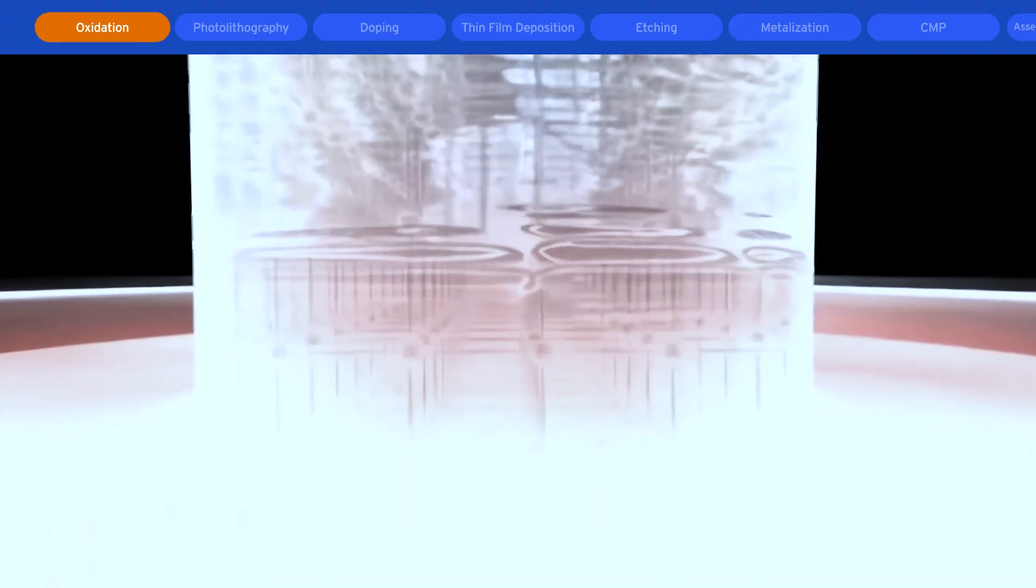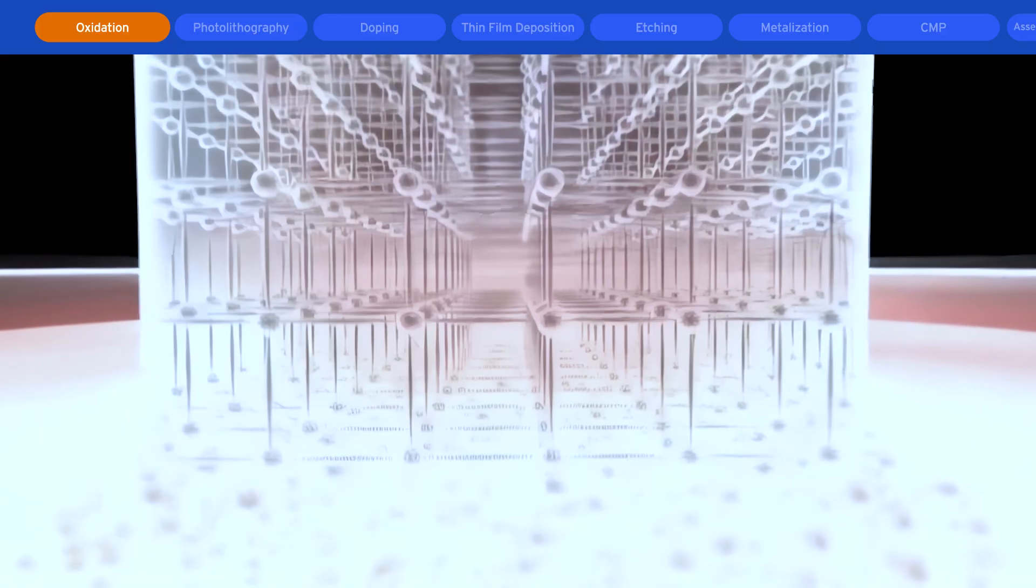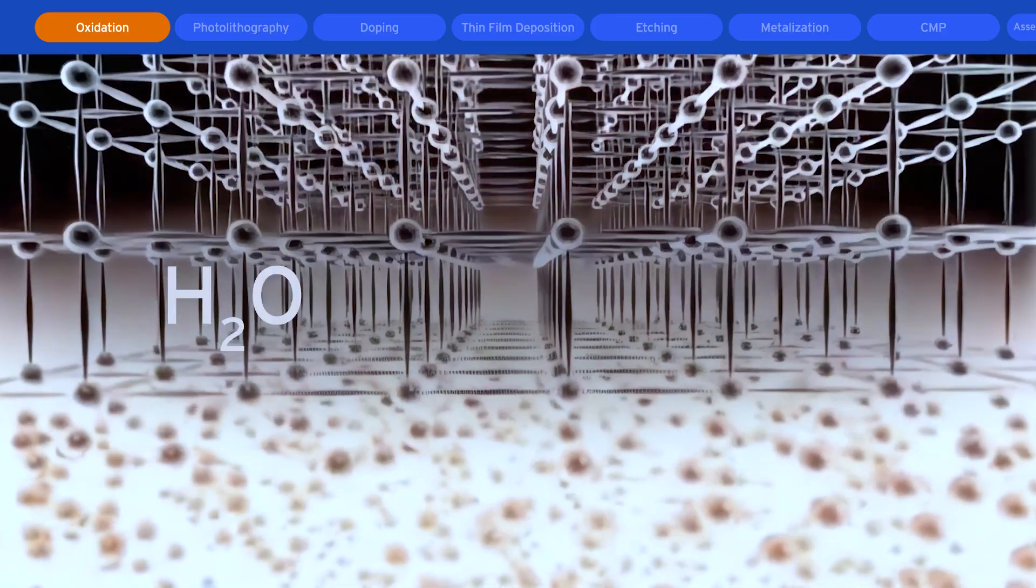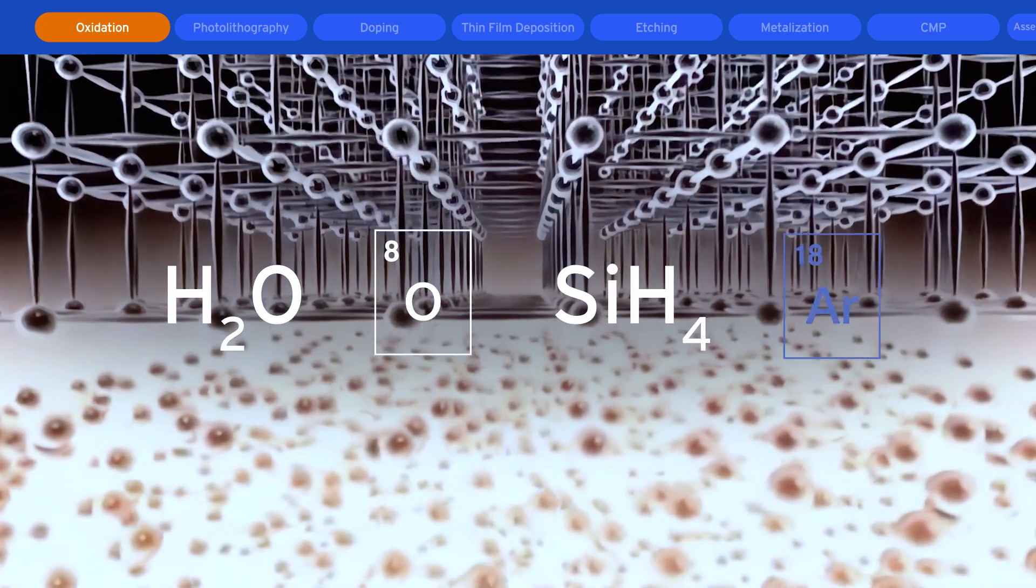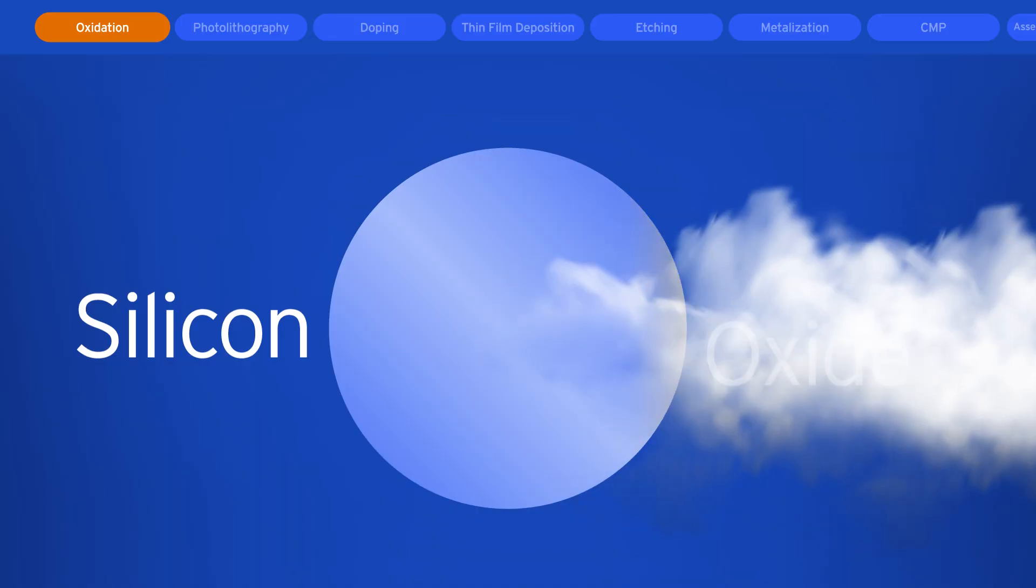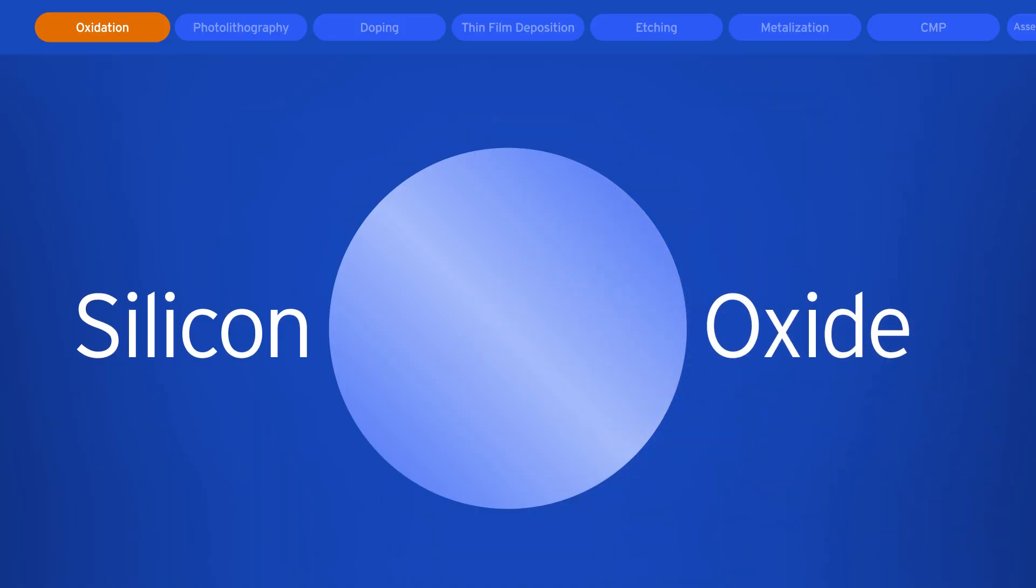First, silicon dioxide is grown or deposited on the wafer through oxidation, by use of oxidative chemicals such as water vapor or oxygen, along with silane and argon. This turns silicon into silicon oxide in deep wells that electrically isolate transistors from each other.